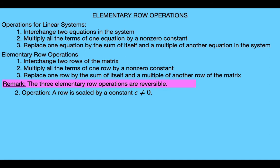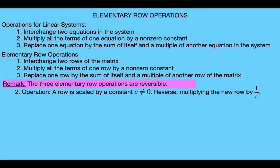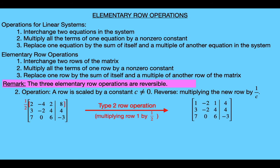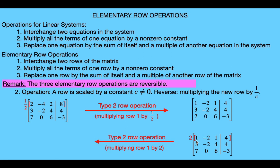Now let's see how we can reverse the second operation. So let's assume we applied a row operation of the second type to some matrix by scaling a row by some non-zero constant C, meaning we multiplied every term of that row by C. Then to reverse that operation, we would just need to multiply the new row by the reciprocal of C. So if we look back at our example for the second type of row operation, where we started out with this matrix and applied the second type of row operation by multiplying the first row by one half and we ended up with this matrix, then to reverse this operation we would start with this new matrix, and then multiply every term of the first row by the reciprocal of one half, which means we would multiply every term of the first row by two. And then we would end up with our original matrix.